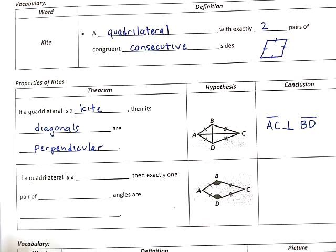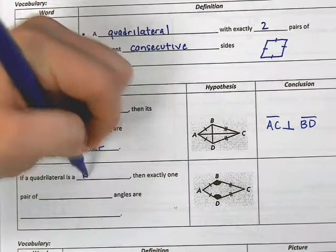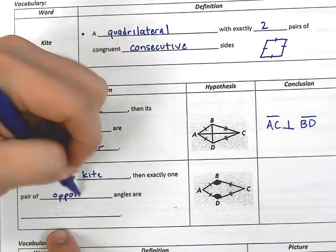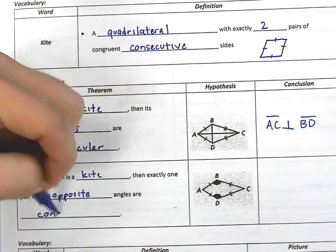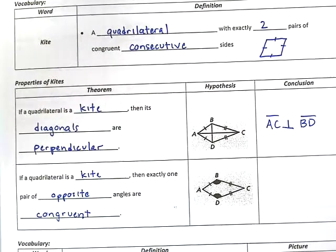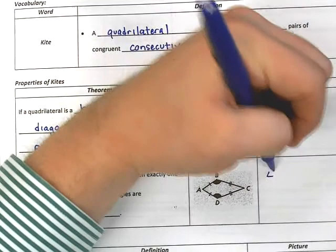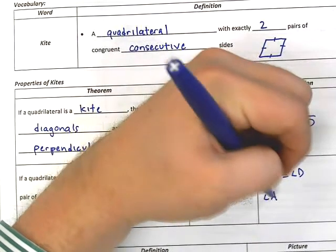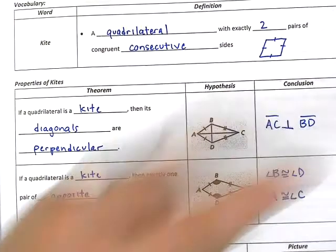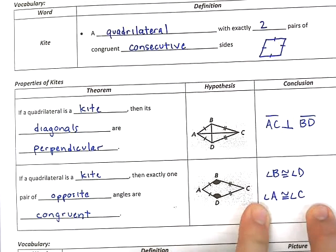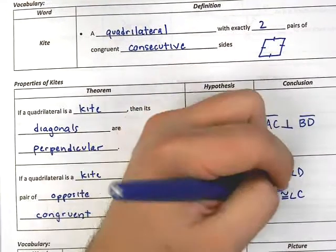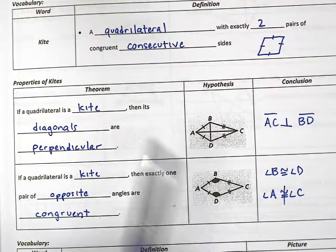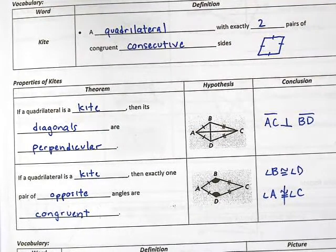And we also know that if a quadrilateral is a kite, then there's exactly one pair of opposite angles that are congruent. So notice here, I'm going to be very specific. I'm going to say angle B is congruent to angle D. And I'm also going to write this. This is a false statement right now. What do I have to do to make this true? Put a line through it. Angle A cannot be congruent to angle C. Only one pair of opposite angles can be congruent in a kite.